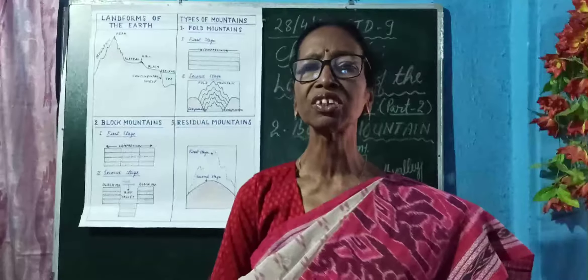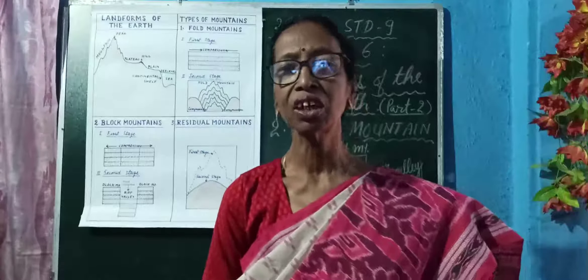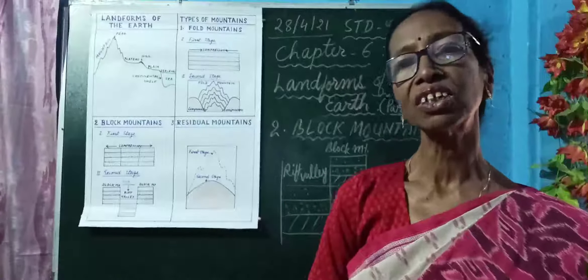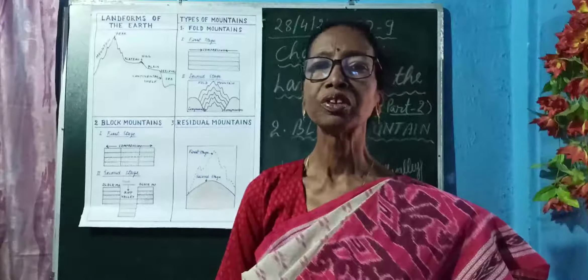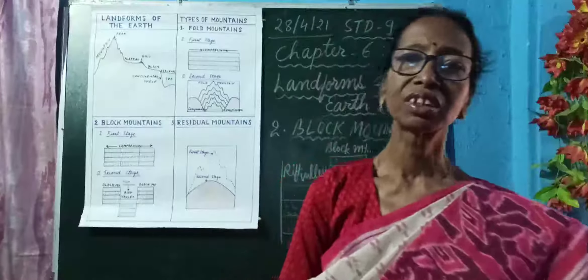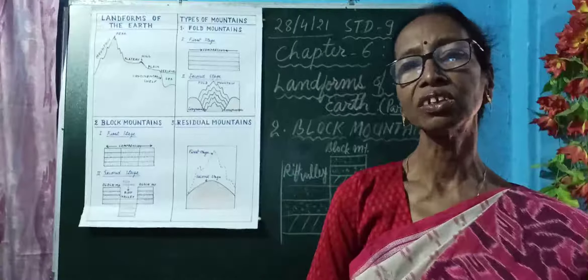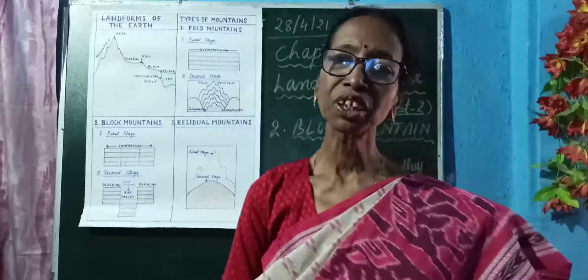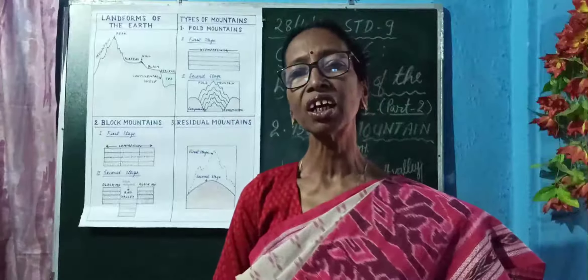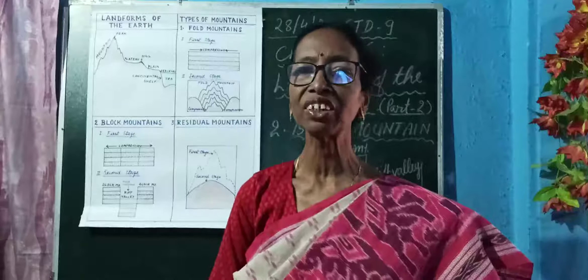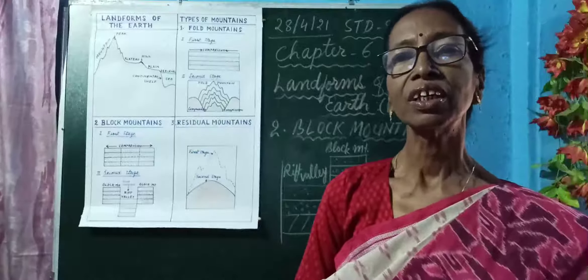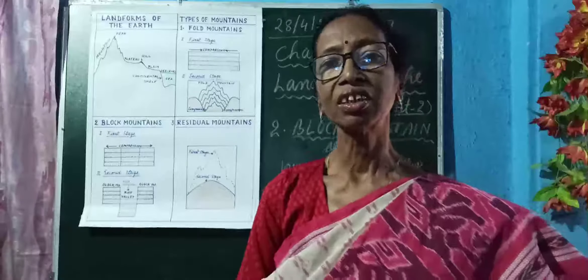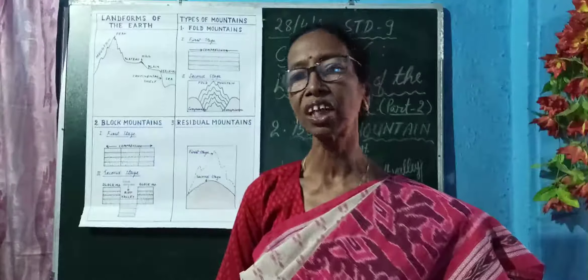Some rift valleys and block mountains are found in different countries and continents. In Europe, there is the Vosges mountain in France and the Black Forest in Germany. In Africa, the whole of eastern Africa is full of many rift valleys and block mountains. In India, the Narmada river valley is also an example of block mountains and rift valleys.